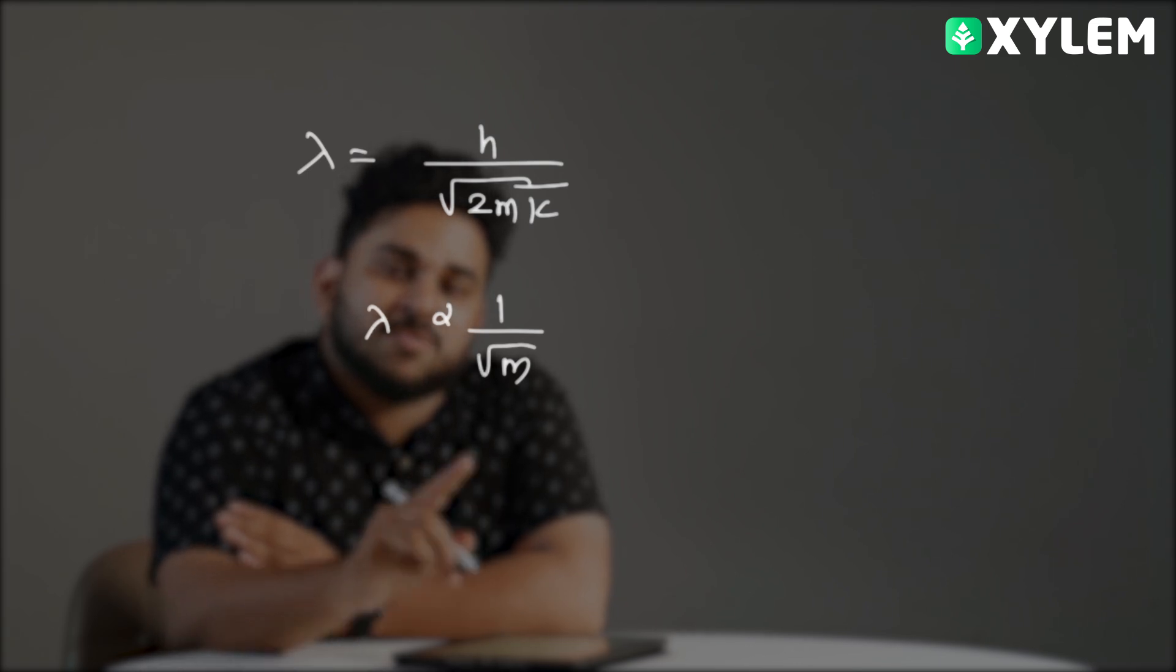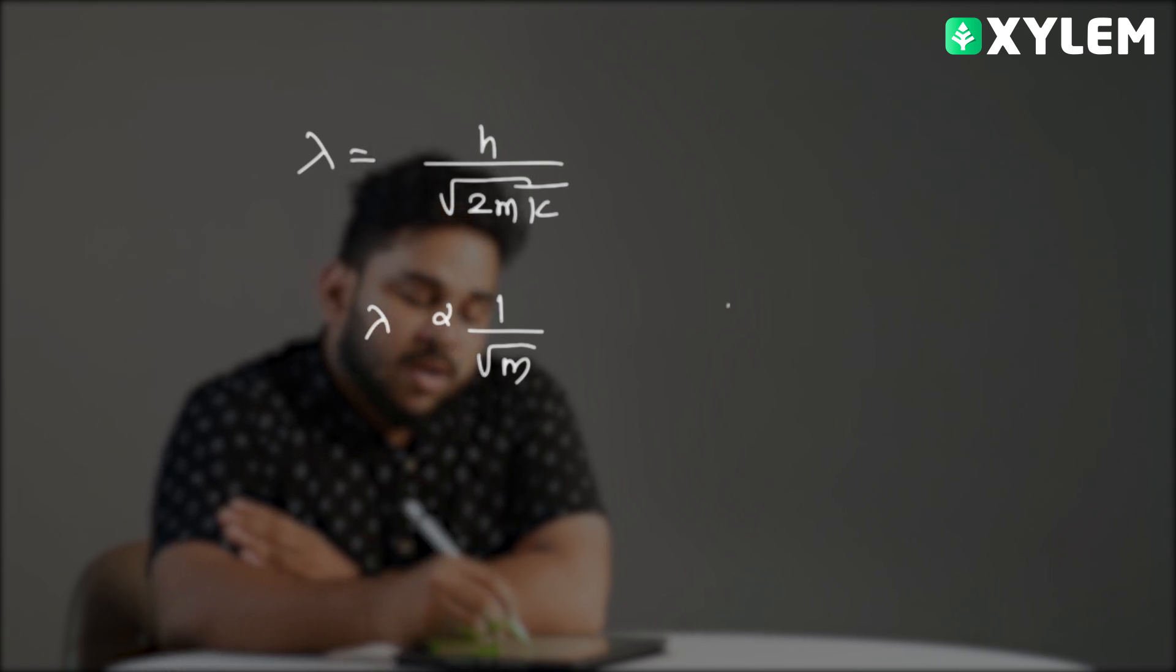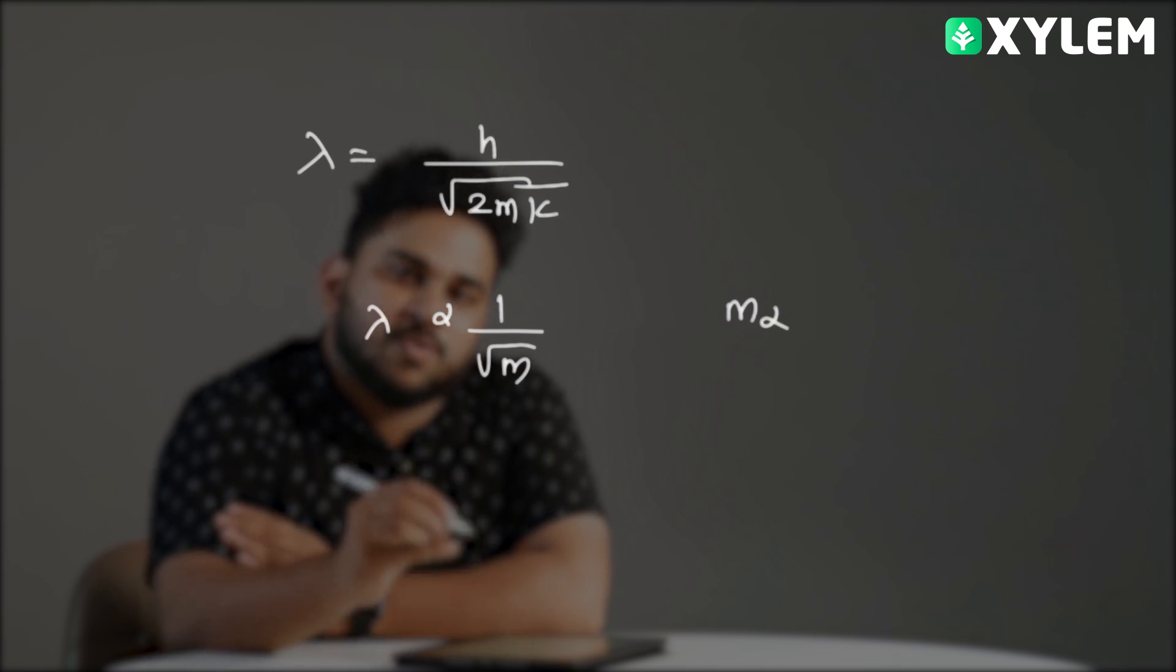Since lambda is inversely proportional to root m, the particle with largest mass has shortest wavelength. Alpha particle has the largest mass, so answer is option A.